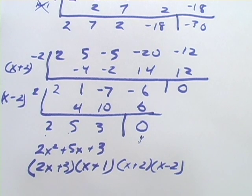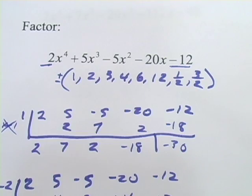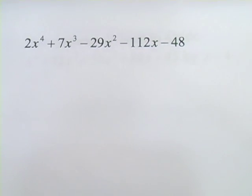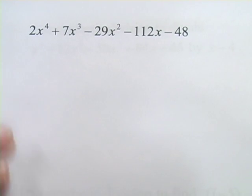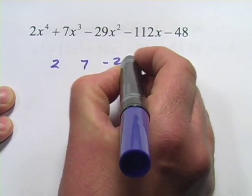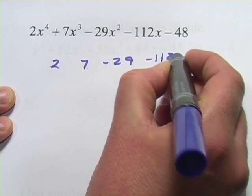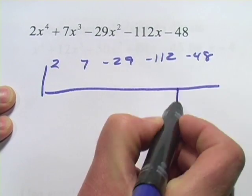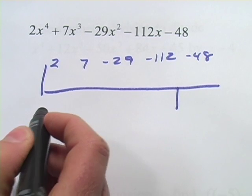Let's try one more, just so we've got this down. So here we've got another one. We're going to set it up for synthetic division. So 2, 7, negative 29, negative 112, and negative 48. Wow. These numbers don't look very friendly. That's all right. We'll suffer through here.